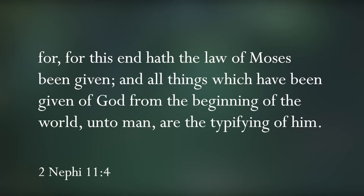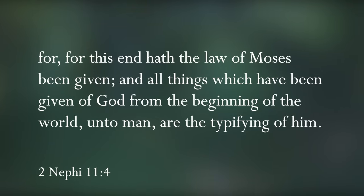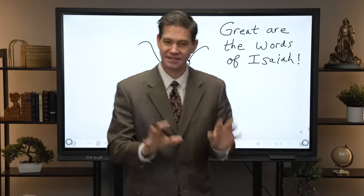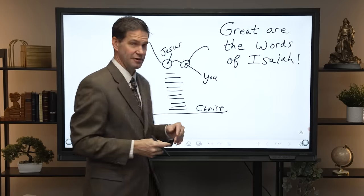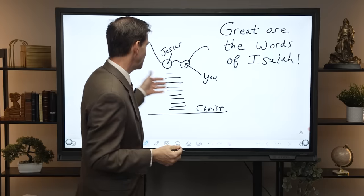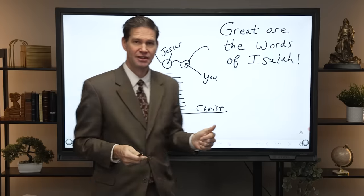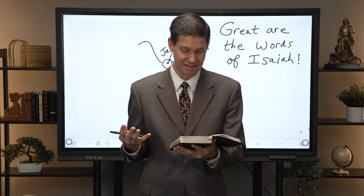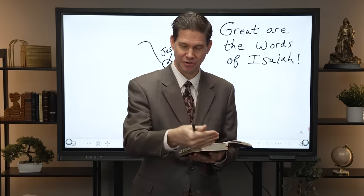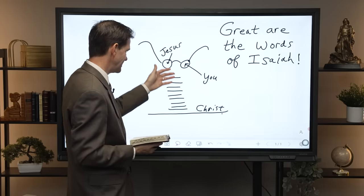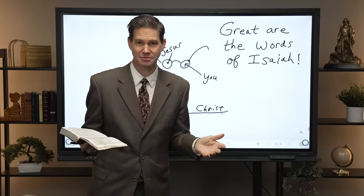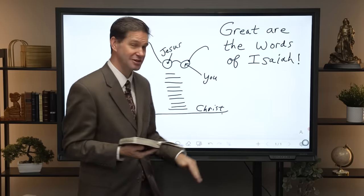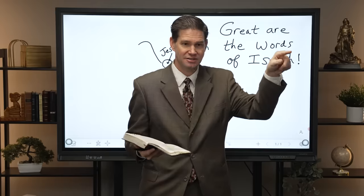Nephi reads all these chapters from Isaiah so that the bottom line, the foundation, is so that people can know the truth of the coming of Christ. He says, "For this end hath the law of Moses been given, and all things which have been given of God from the beginning of the world unto man are the typifying of him." So you can find exciting interpretations at multiple levels in any scripture, but his point is this: the fullness of intent of everything God has ever given from the beginning is to typify Christ. In all our zeal to teach any doctrine or principle, if we miss the Lord Jesus Christ as the foundation, then we miss the mark.